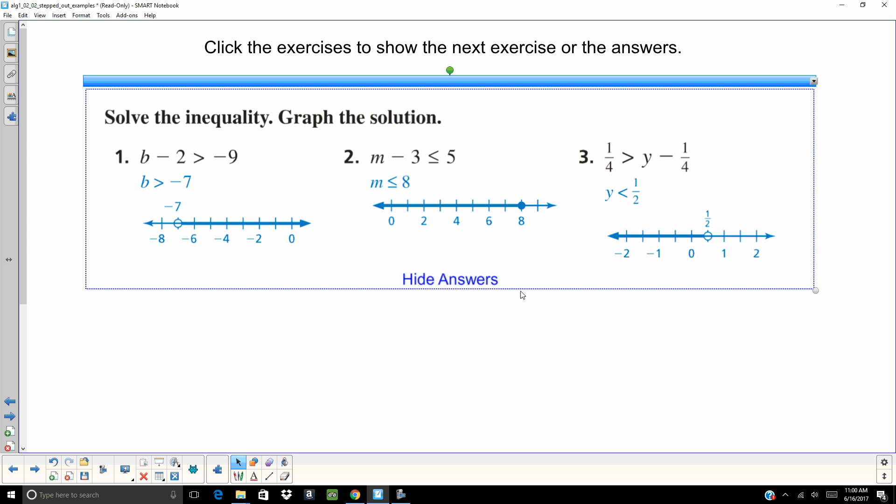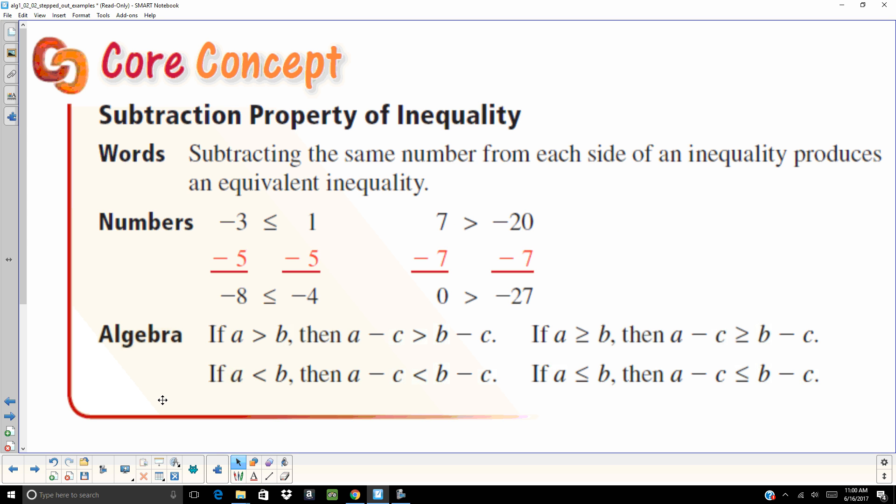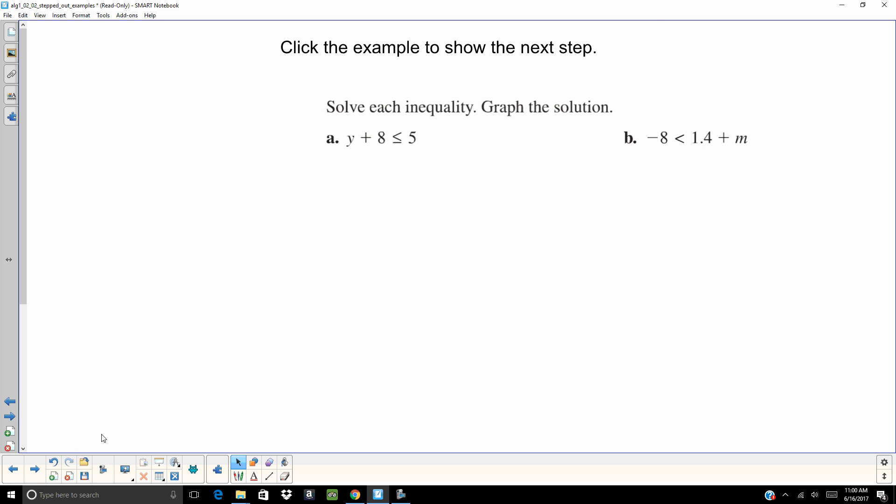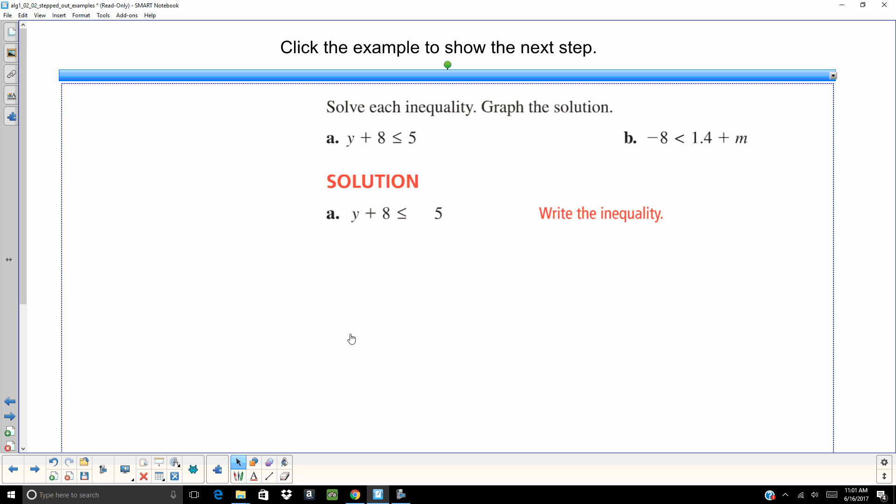Subtraction property of inequality, same thing, pretty much. Whatever you do to one side of the inequality sign you do to the other side. So I have y plus 8, I'm gonna ask myself how can I get rid of that plus 8? Well, subtract 8. I'm gonna subtract 8 from both sides, get y is less than or equal to negative 3, so I need to shade all numbers that are smaller than negative 3.